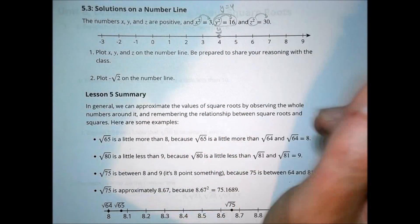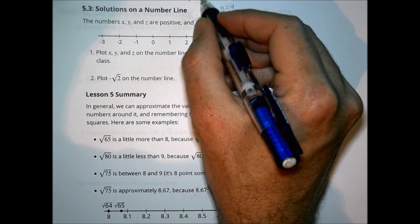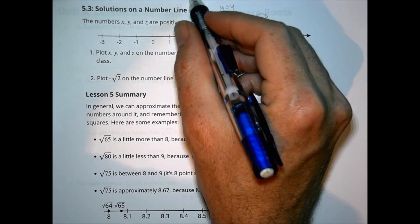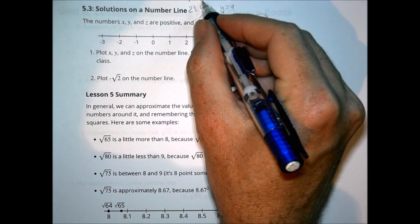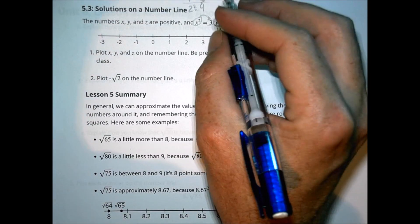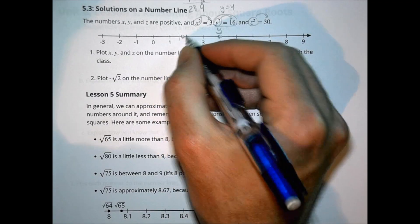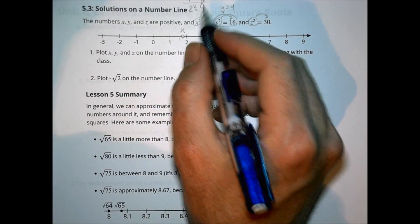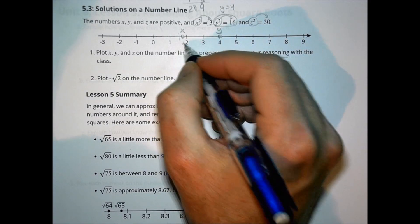For the other ones, the value is going to be in between something. We want something that when squared gives us 3. We know 1 squared is 1 and 2 squared is 4 — we want to get to 3, so we're looking for a number between 1 and 2. It's closer to 2, so we'd say greater than 1.5 and less than 2 — maybe about 1.7. So that's why x is placed just above 1.5.